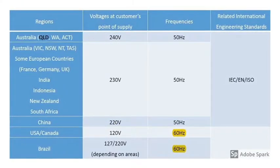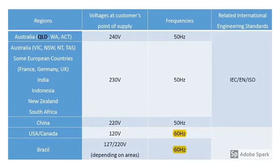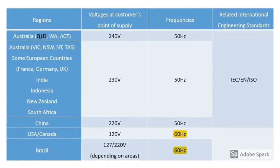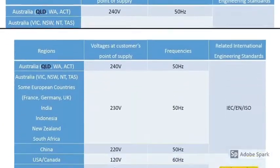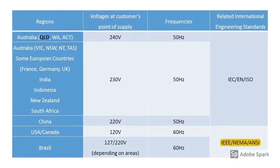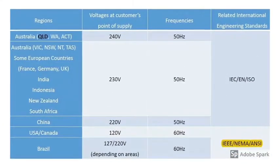The US, Canada and Brazil have 60 hertz electricity supply at lower voltages. IEEE standards are the international standards these regions often relate to.